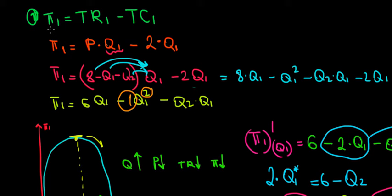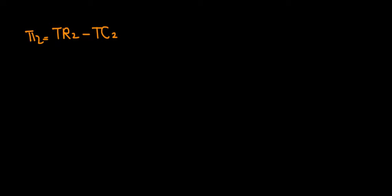Recall from the previous video that we worked on the profit of the first company by taking into account the price when both companies produce and the quantity that the company produces itself. With the same logic, we're going to work on the profit of the second company — differentiate that and see what the relationship between Q2 and Q1 will be. So let's write the profit of the second firm below.